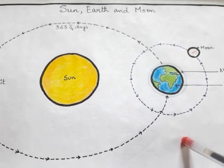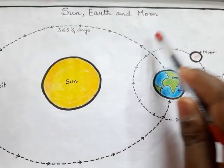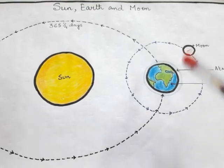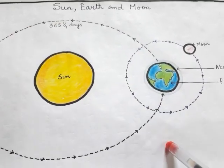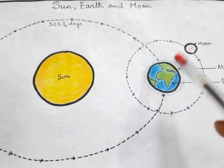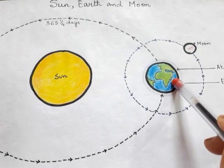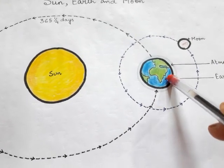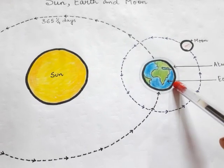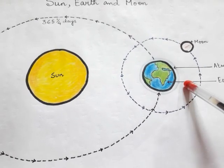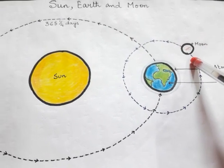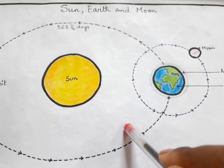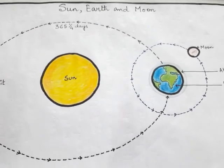Today we have studied about the Sun, Earth, and Moon. We learned how the Earth revolves around the Sun, why life exists on Earth, and about the Moon — the only natural satellite of the Earth. Hope this concept is clear. Thank you, class.